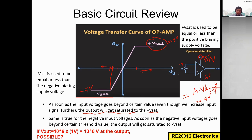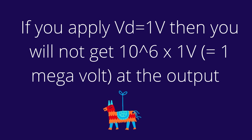Now you can understand why, from the earlier example, applying one volt as a voltage difference will not give you 10^6 volts at the output — it's simply not possible due to output saturation.